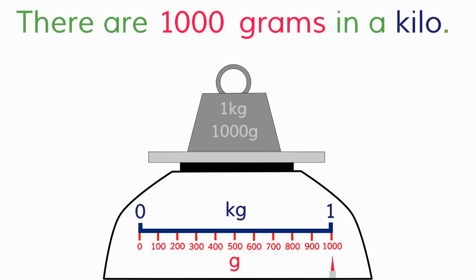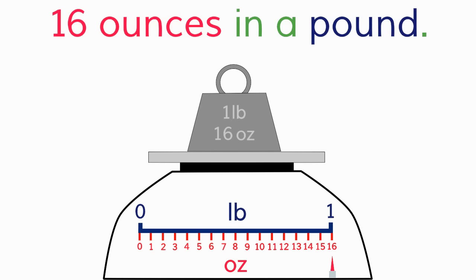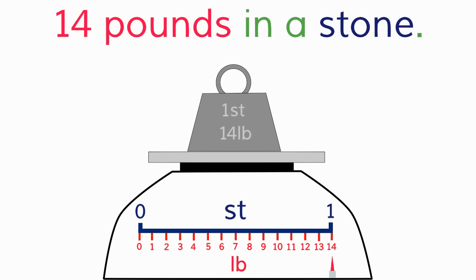There are a thousand grams in a kilo, 16 ounces in a pound, 14 pounds in a stone. So now you know,